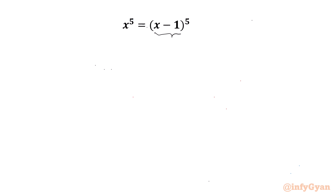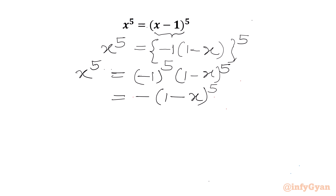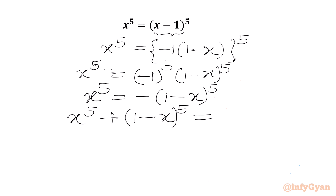I will take minus 1 common from this bracket, so I can write minus 1 times 1 minus x, whole power 5. The left hand side is x power 5. Now using exponent laws, we can write minus 1 whole power 5 times 1 minus x whole power 5. Now minus 1 whole power 5 is minus 1, so I will write minus of 1 minus x whole power 5. Taking all terms to LHS: x power 5 plus 1 minus x whole power 5 equal to 0.